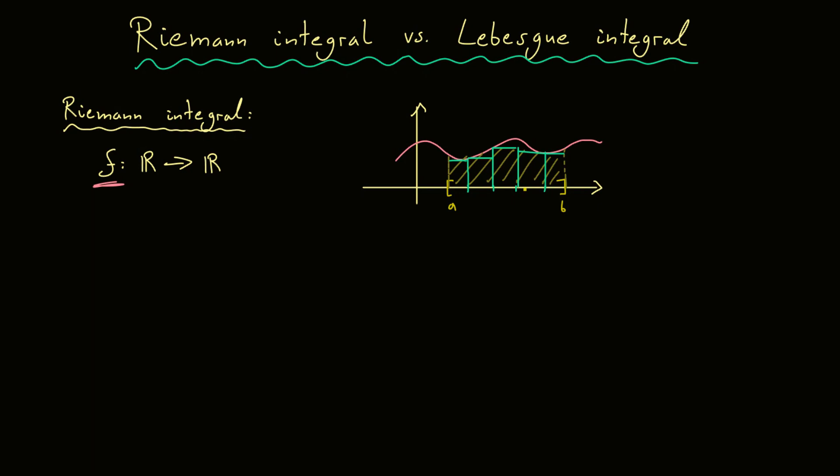If we now choose finer and finer partitions, we call this limit of the lower or upper sums the Riemann integral, if the limit is well defined. That was a short summary of the Riemann integral, and now we immediately find some problems. These problems give us a reason to define another integral notion.